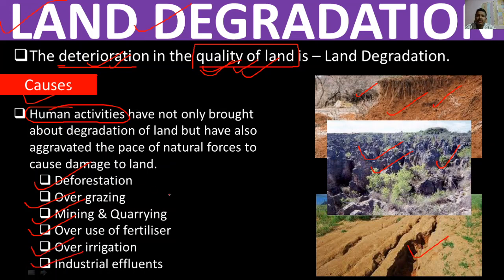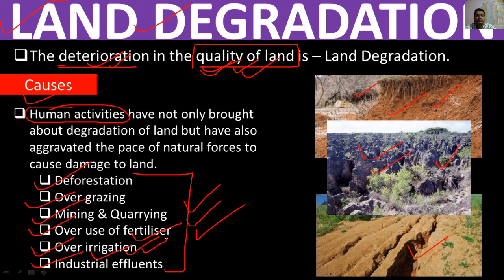Industrial effluents are also a cause of land degradation. If we overuse fertilizers, the fertility of the soil decreases. Over-irrigation causes salts from below the surface to come up and deposit on the soil surface, reducing its fertility. Industrial effluents add poisonous particles into the land, degrading its quality.